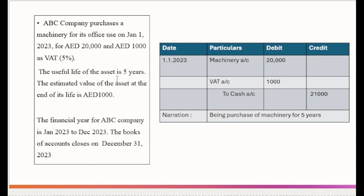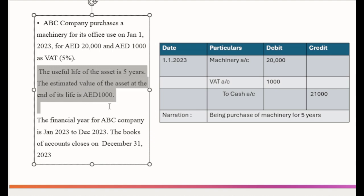The useful life of the asset is 5 years and the estimated value of the asset at the end of its life is 1,000 dirhams. This is important for the calculation of depreciation. At the time of purchase the entry passed is: machinery account debited 20,000, VAT account debited 1,000, and to cash 21,000 — that is 21,000 payable as the total amount for the purchase of machinery.